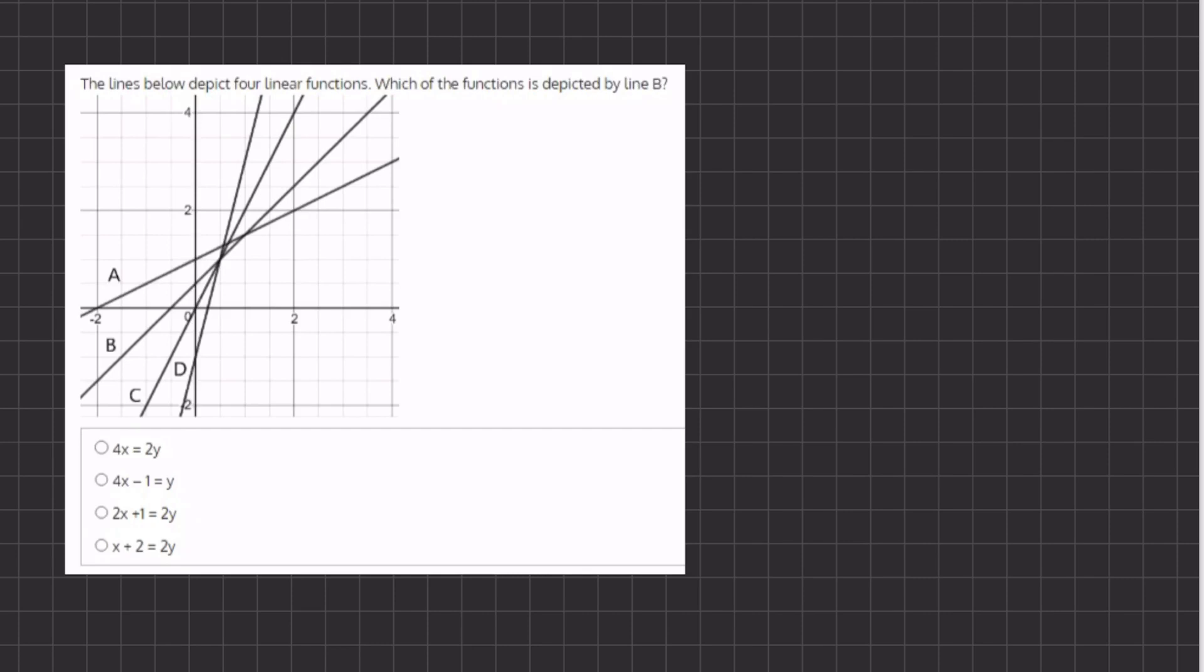Alright, so in this problem we have four linear functions and we want to know which of the following functions represents this line right over here that's labeled b.